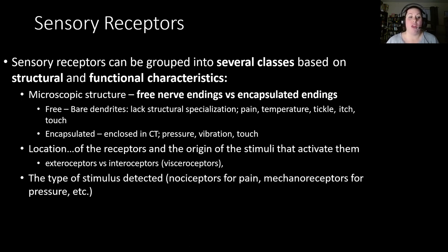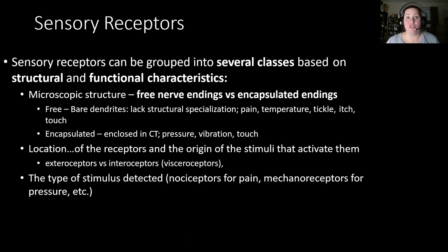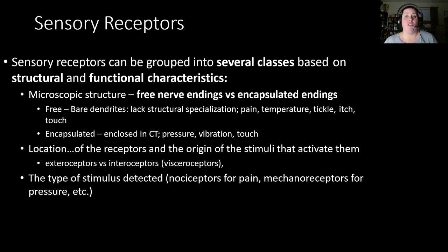Another structural classification is location. Exteroceptors are on the outside, detecting external stimuli. Interoceptors are inside, associated with your visceral organs. Functionally, the type of stimulus detected also gives us information: nociceptors detect pain, and mechanoreceptors detect pressure or mechanical change. You can often figure out what a receptor detects based on its name.